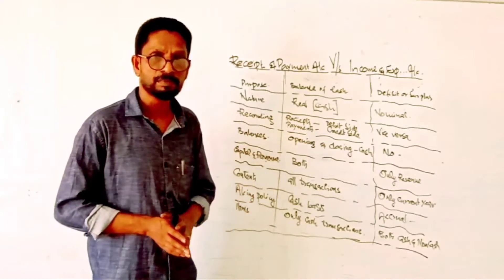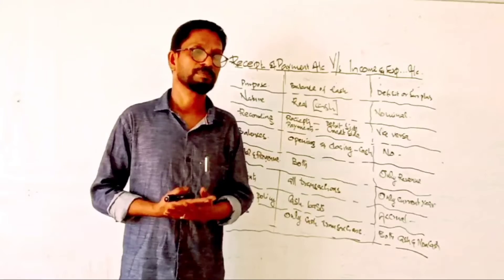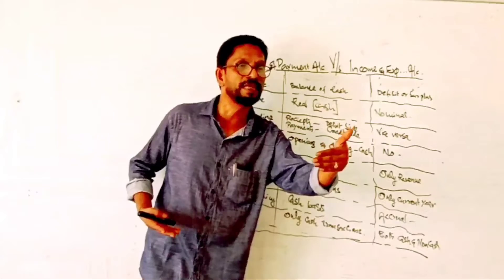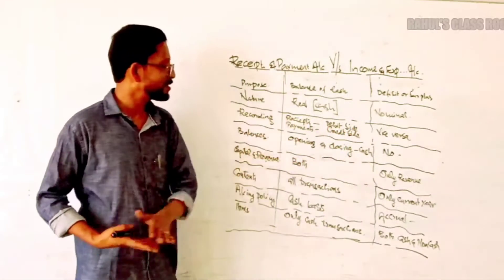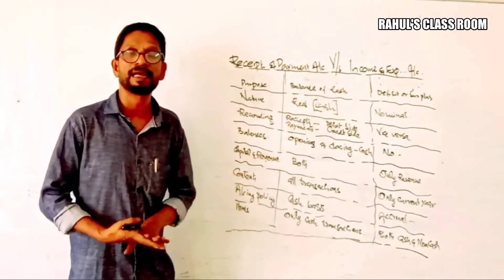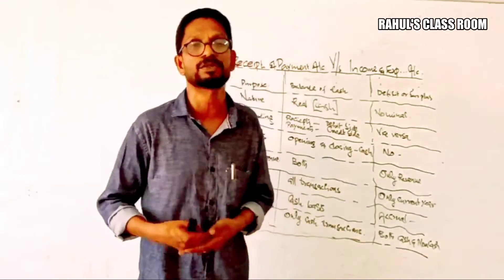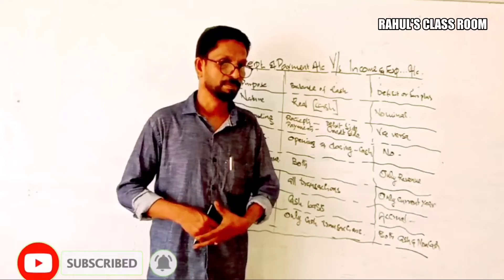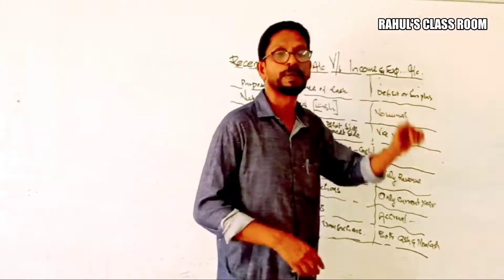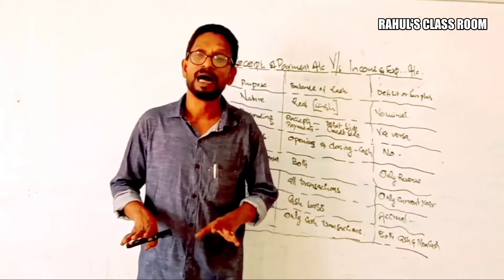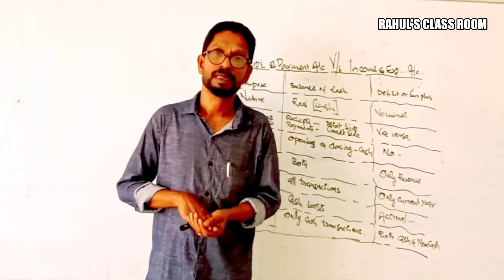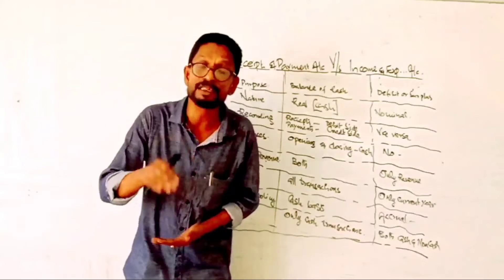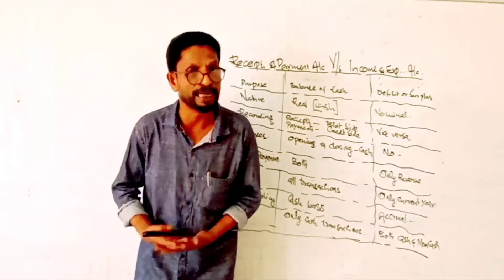The fourth difference is Balance. The Receipt and Payment Account begins with an opening balance of cash and ends with a closing balance of cash. But in the case of the Income and Expenditure Account, it has no opening balance.